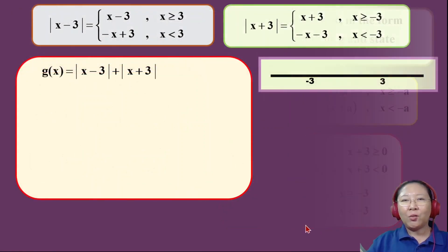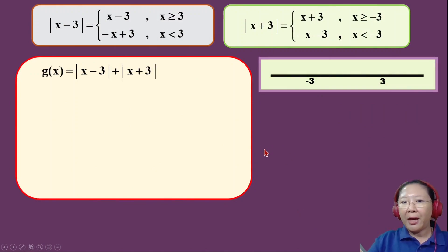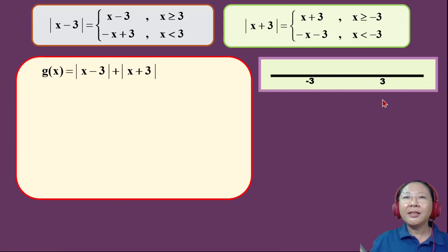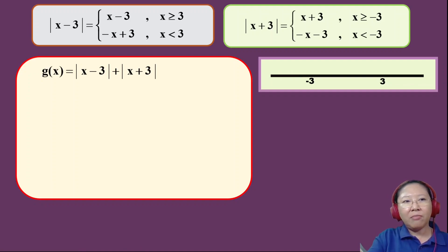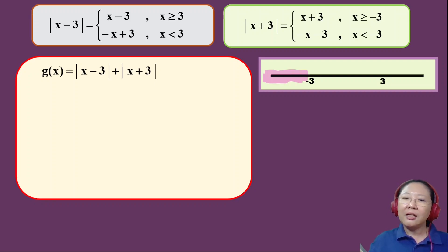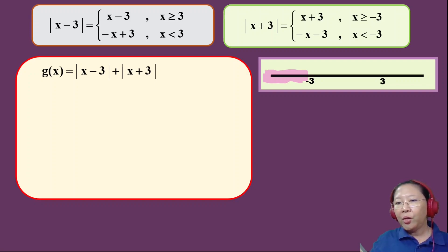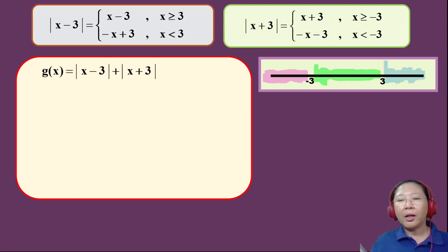Next I put these two equations into position by preparing my inequality. I draw a number line and decide what positions I need. According to the critical values, I have three regions: x less than −3, from −3 to 3, and x greater than 3.